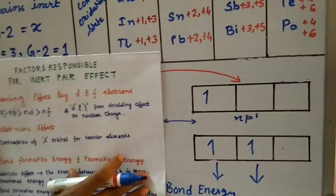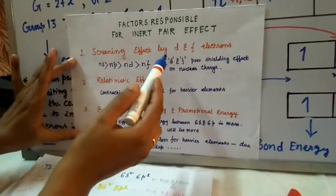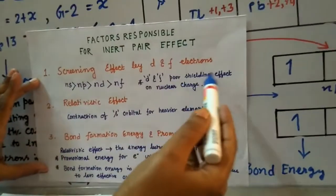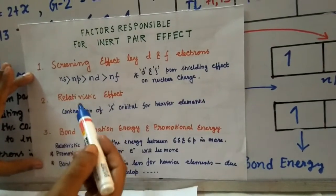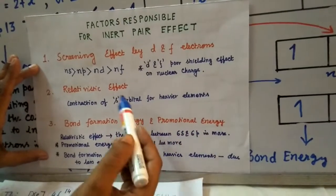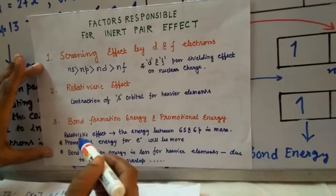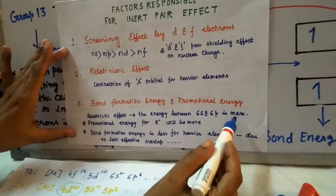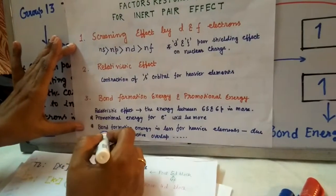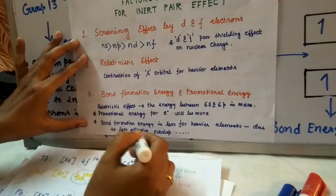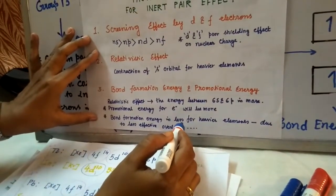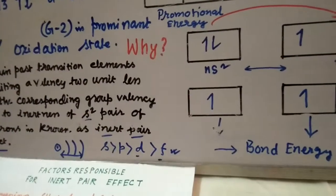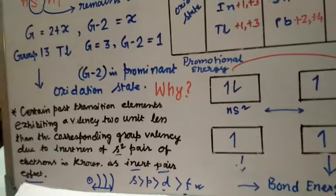To summarize, the three reasons why the inert pair effect occurs are: first, screening effect by d and f electrons — with the order s > p > d > f, d and f electrons are poor shielders of nuclear charge; second, the relativistic contraction of the s orbital for heavier elements; and third, the imbalance between bond formation energy and promotional energy — the relativistic effect increases the 6s–6p energy gap, raising promotional energy, while less effective orbital overlap reduces bond energy, making compensation impossible.